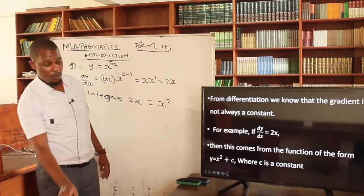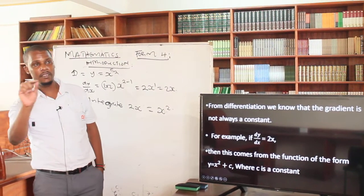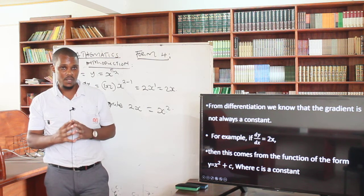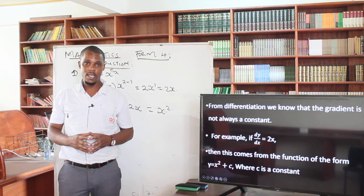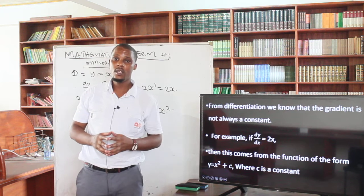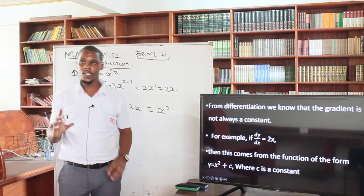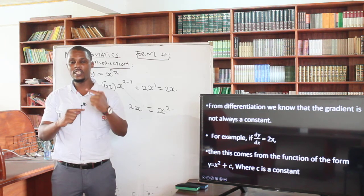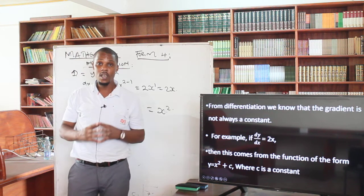From differentiation, we know that the gradient is not always a constant. When I give you a curve, the gradient will keep on changing depending on the point on the curve you are considering. For example, if dy/dx equals 2x, then this comes from a function of the form y equals x squared plus c, where c is the constant. Because at each and every different point on the curve, the gradient keeps on changing — that is why we have y equals x squared plus c.